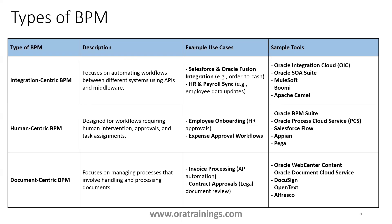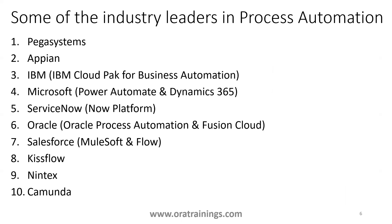Human-centric BPM is where manual intervention of the user is required — mostly an approval mechanism or information sharing mechanism where manual processes are involved. Document-centric BPM is more of a document approval mechanism, like contract approvals. Based on the requirement, you have to use the specific product available in the market.